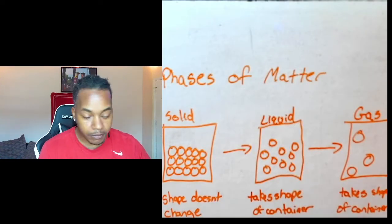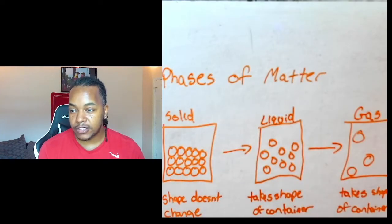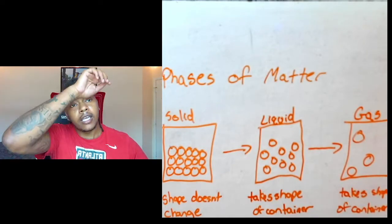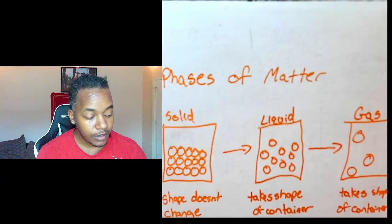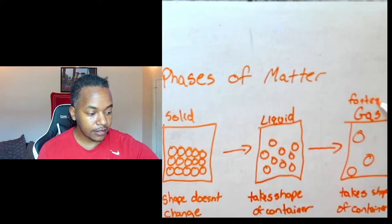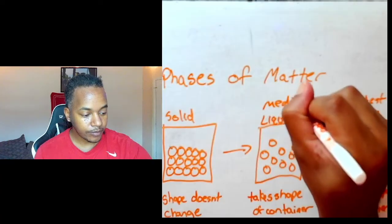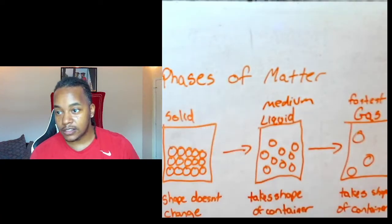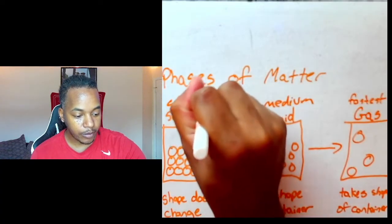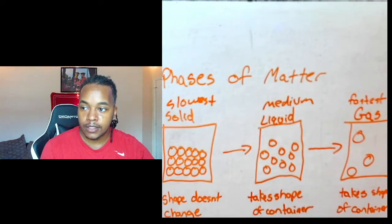So the difference between these three is basically particle arrangement. Here the particles don't move at all. Here the particles kind of bump against each other and move a little more but not much. Here the particles bounce off each other and have a lot of space in between them. So the particles are moving fast—it's going from fast to slow. This is the fastest that particles will move, this is medium, this is the slowest because all it does is vibrate. The particles aren't moving, they're just vibrating.